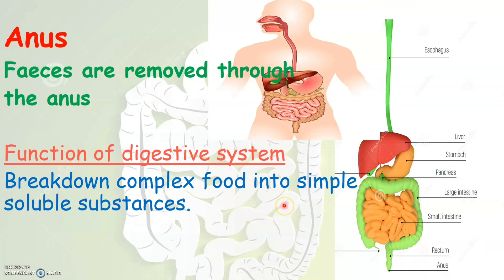So we have now learned what is the digestive system and also the different organs that form the digestive system. The function of the digestive system is to help in the breakdown of complex food into simple soluble substances that can be absorbed by our blood.